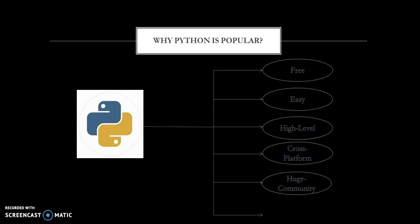Python also has a huge community. While developing any application, if you are stuck somewhere, there will be someone who can assist and help you. Next is its large ecosystem — Python has so many libraries, tools, and frameworks. For example, machine learning algorithms are already available in Python. Because of this reason also, Python is the most popular language. These are some of the highlighted points which make Python popular.